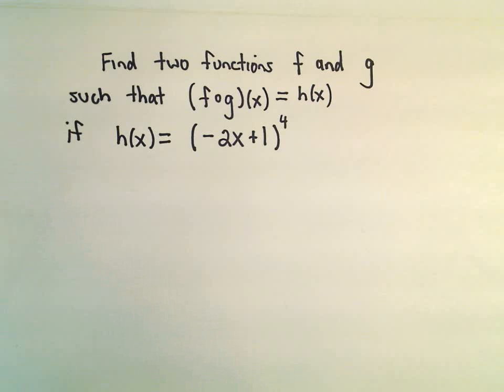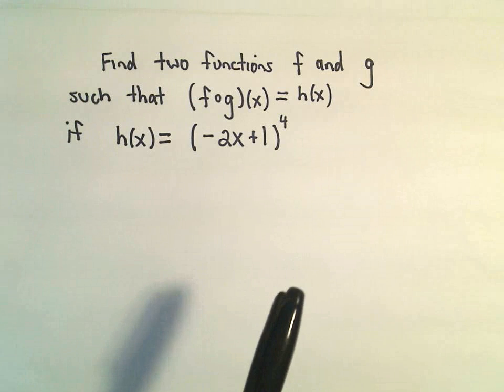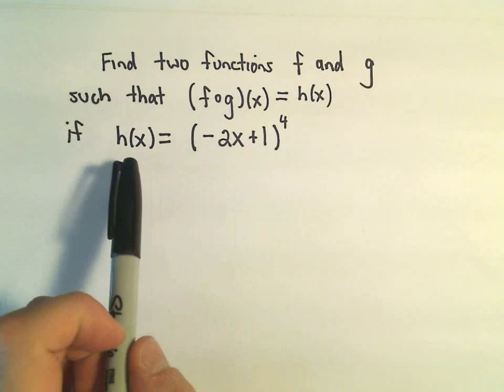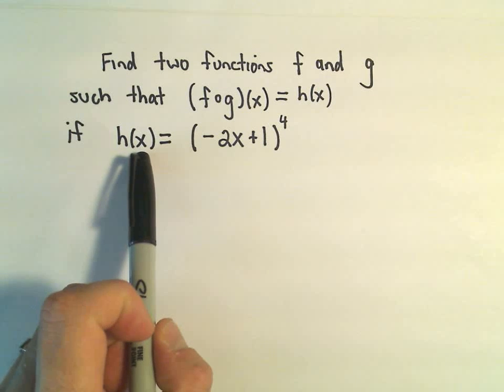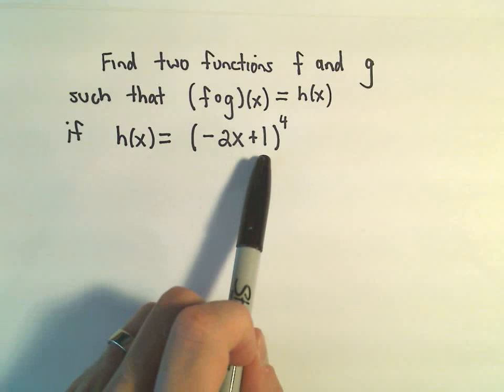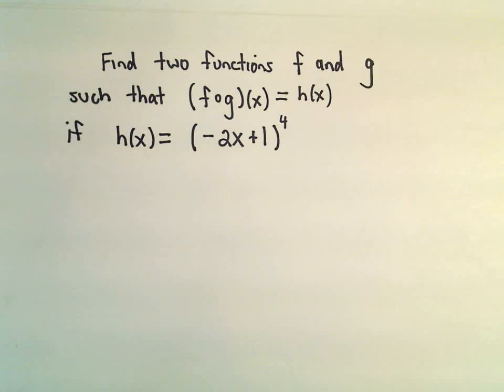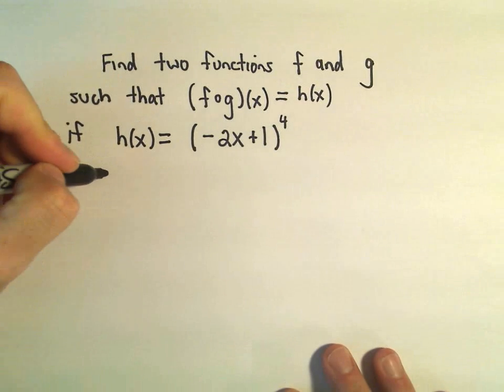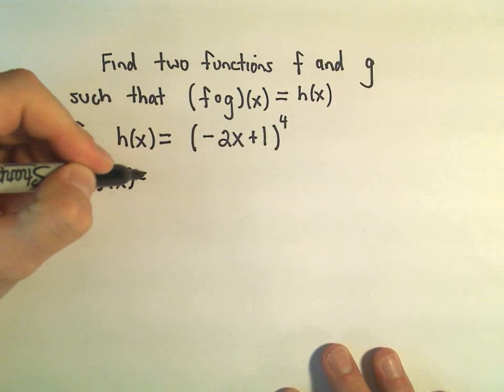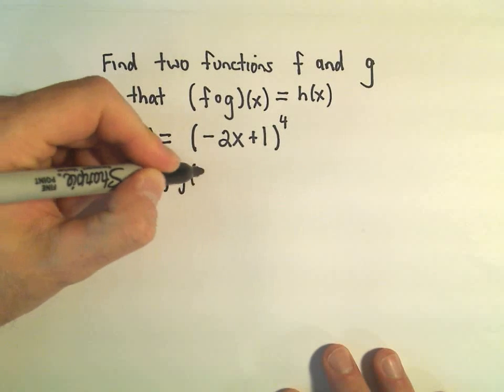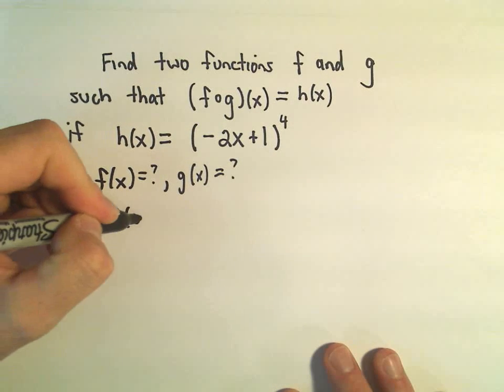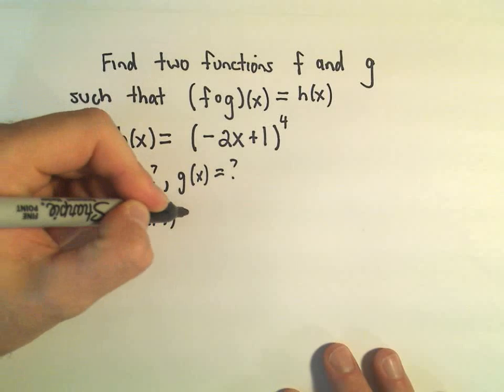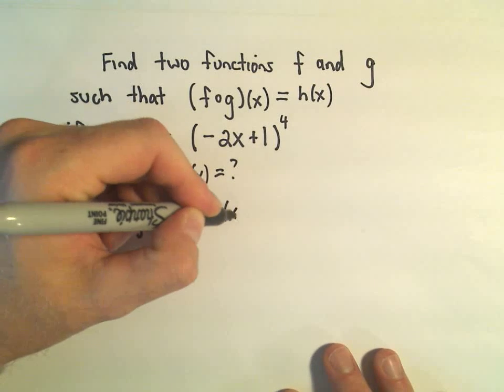So, often times we're given our two functions f and g and we want to figure out the composition. Suppose we want the final answer, suppose we'll call it h(x). Suppose we want that to be (-2x + 1) all raised to the fourth power. We want to know two functions f and g, so we want to know what f(x) should equal and what g(x) should equal so that when we do f composed with g of x, we want that to equal our function h(x).